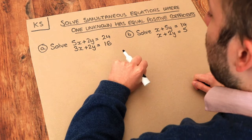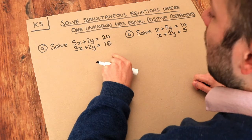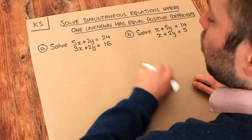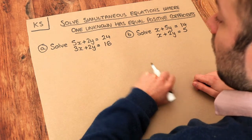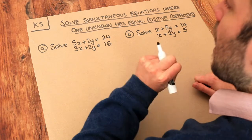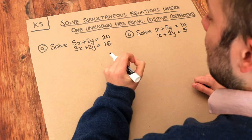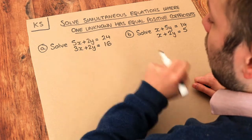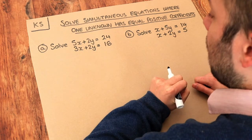Now simultaneous equations are when we have more than one equation involving more than one variable. In this particular case we've got two equations involving two variables x and y, and we want to find out what x is and what y is such that both of these equations are true at the same time.